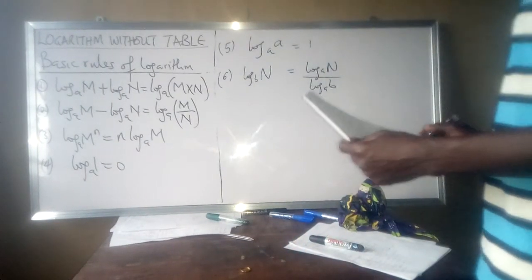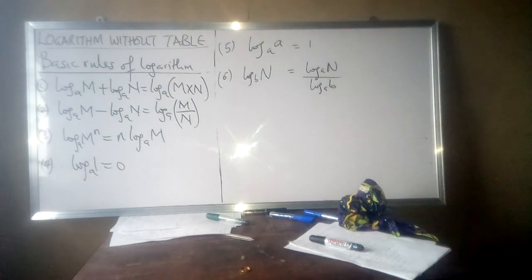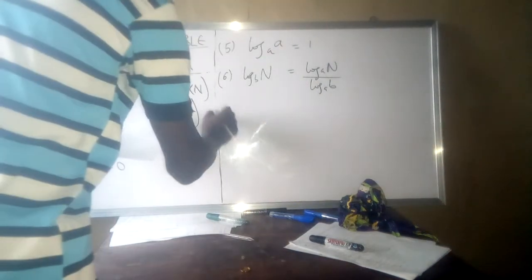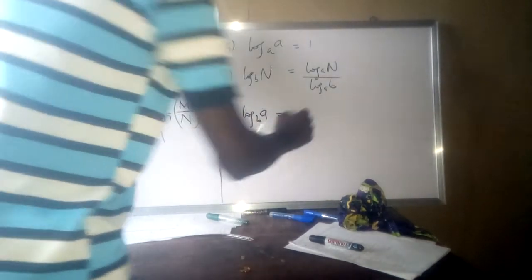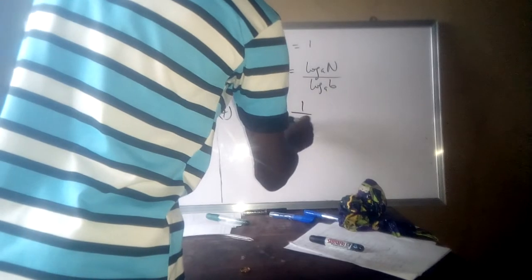So you can also have the seventh one as log a base b can be expressed as 1 all over log b base a.